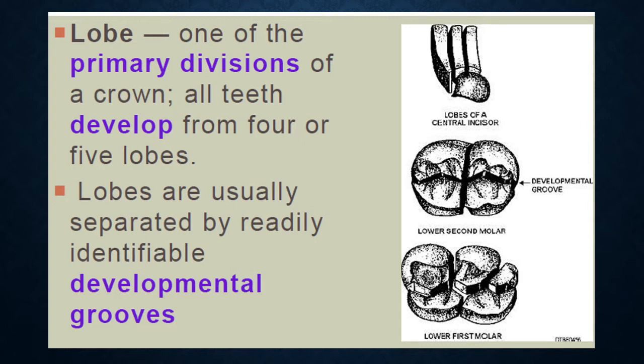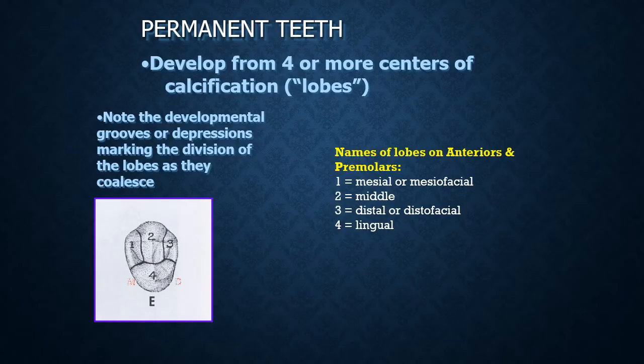This coalescence usually happens when the crown is formed and at least one third of the root is also formed — before the teeth actually emerge into the oral cavity. These primary parts are known as the primary parts of the tooth. As seen with the lower second premolar and lower first molar, different parts correspond to the number of cusps.